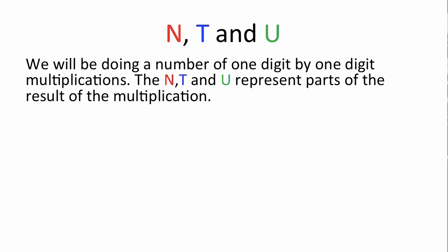When looking at fast division, there's a couple of terms that we need to learn. Because we'll be doing a number of one-digit by one-digit multiplications, the N, T, and U represent parts of those results of the multiplication.